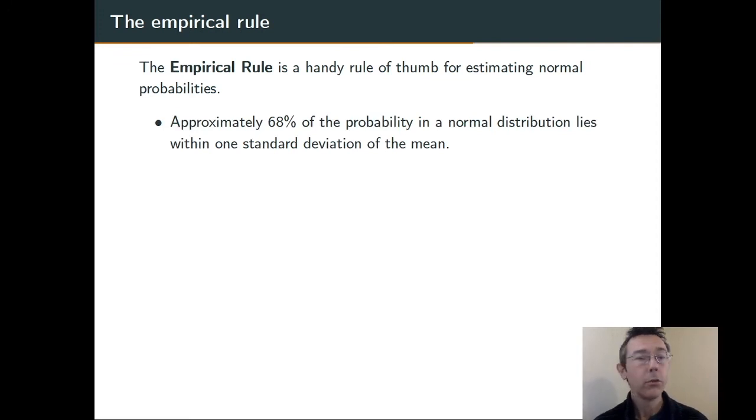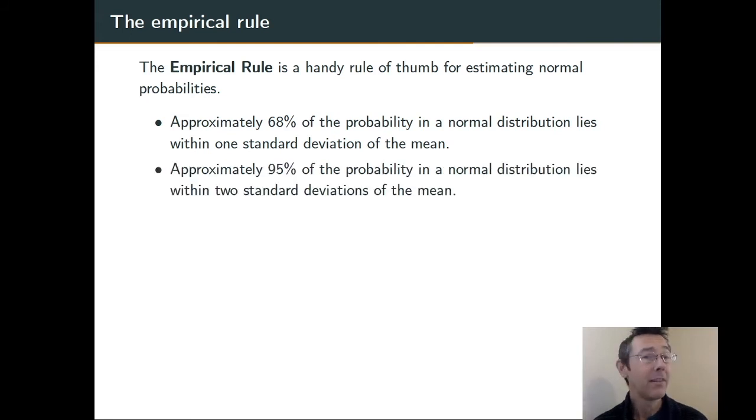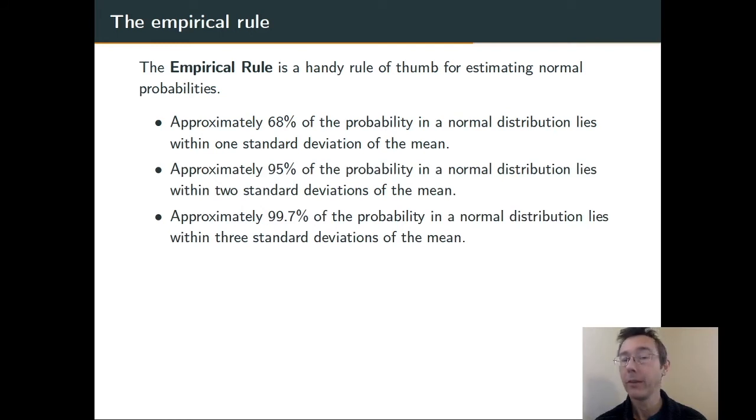In any normal distribution, about 68% of the probability lies within one standard deviation of the mean, 95% lies within two standard deviations of the mean, and 99.7% lies within three standard deviations of the mean.